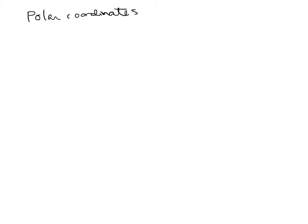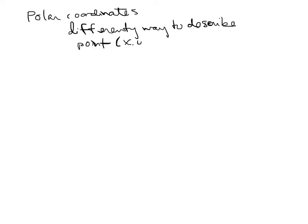In this video we're going to talk about polar coordinates. Polar coordinates are a different way to describe a point on an x-y coordinate system. So if we just have this point over here, normally to get to that point we move some distance x along the x-axis, and then we move some distance y up or down to get to that point. That's how we're used to describing points.